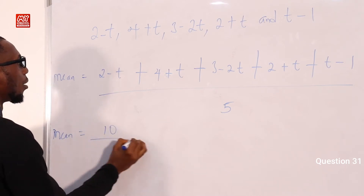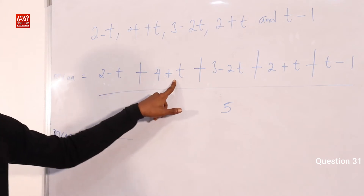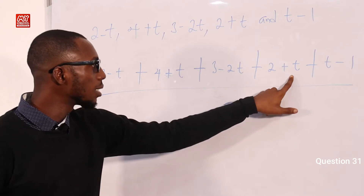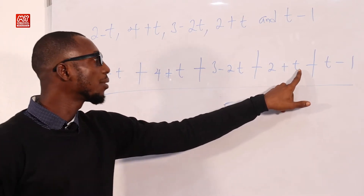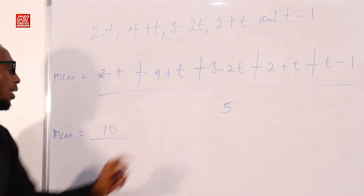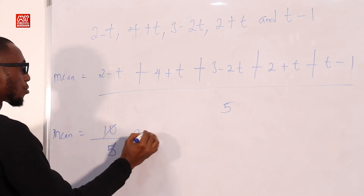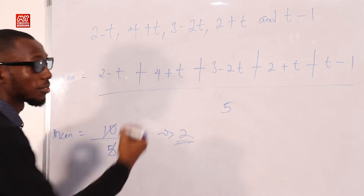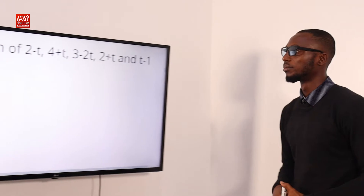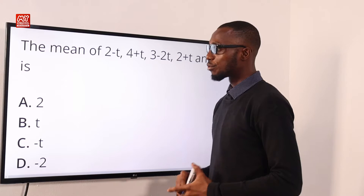So we have 10 for the constants. For the t terms: minus t plus t is 0, minus 2t plus t is minus t, then minus t plus t is 0. So we have no t left. That gives us 10 over 5, which equals 2. The mean we are looking for is 2. Going back to the screen, option A carries the value 2, so option A is correct.